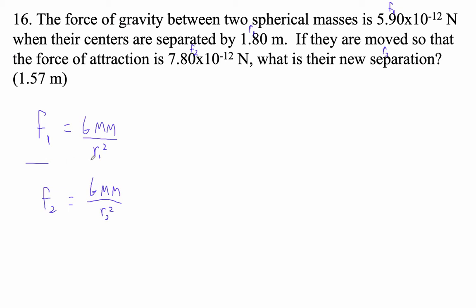And of course, I can divide left by left and right by right. And I end up with F1 over F2 equals R2 squared over R1 squared. Okay, now let's see. We're solving for R2, so what we end up with is R2 equals the square root of F1 over F2 times R1.